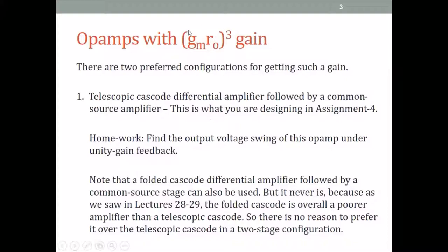Also note that for getting GMRO cubed, one could use a telescopic cascode followed by a common source, or a folded cascode followed by a common source. But we have seen before in lectures 28 and 29 that given a choice, a telescopic cascode has a better performance compared to the folded cascode in practically every aspect. Therefore, if one wants to build a two-stage amplifier like this, one never uses a folded cascode differential amplifier as the first stage.